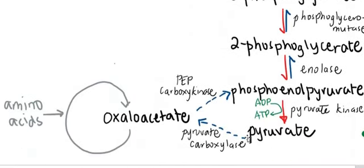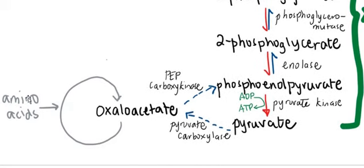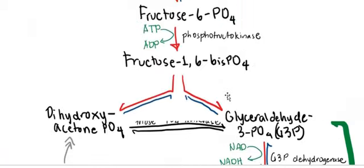The direction of pyruvate kinase is effectively reversed by these two enzymes. One interesting thing about oxaloacetate being in this pathway is that it is also part of the Krebs cycle. That means that if your body is in dire need — for example, if you're starving for a day or two — it can utilize amino acids and use your proteins to make glucose by going through oxaloacetate, then to PEP, and all the way back to glucose.